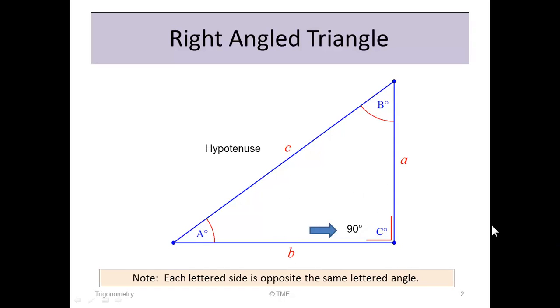Let's review the right-angle triangle. It has three sides, a 90-degree angle opposite the largest side called the hypotenuse, and three sides with letters A, B, and C. Importantly, each lettered side is opposite the same lettered angle. So A is opposite A, B opposite B, and angle C opposite side C.